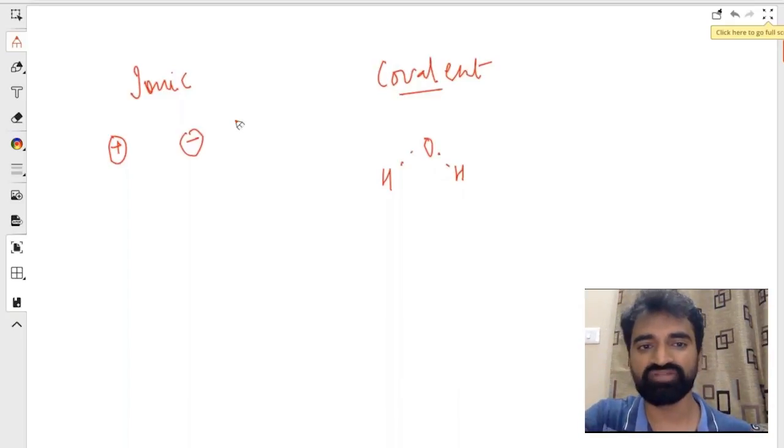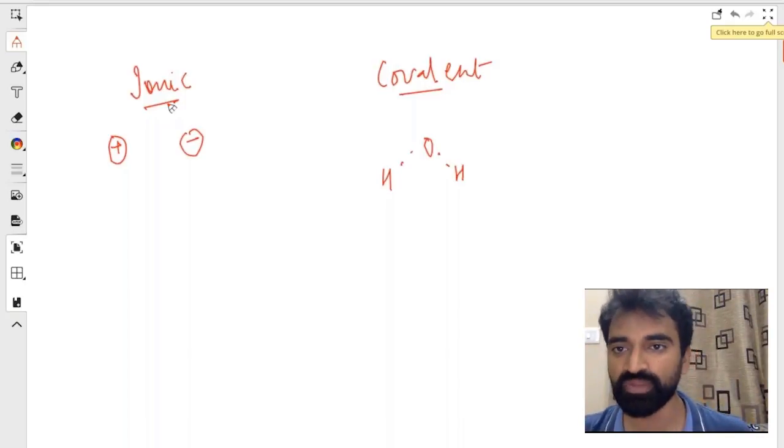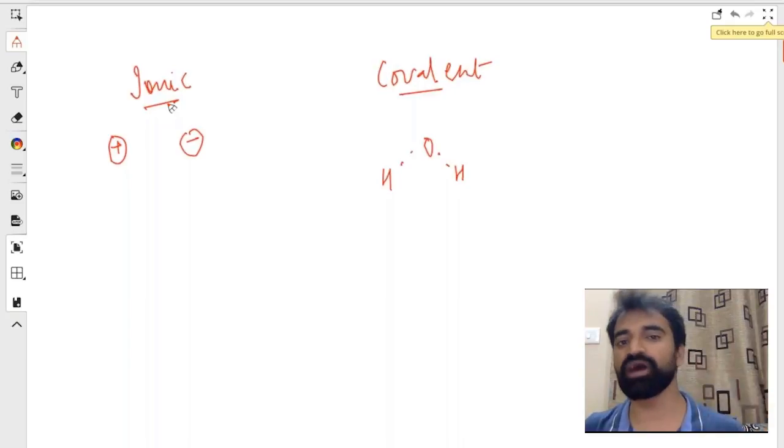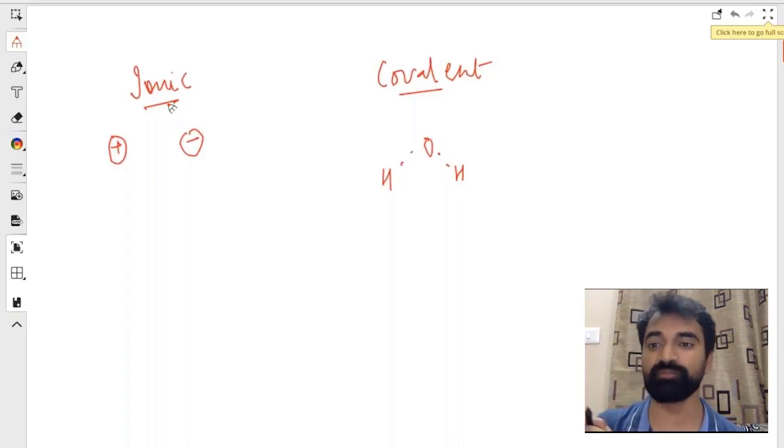Concept number one that I'm going to talk about is called polarization. Polarization states that no molecule that we have is strictly ionic or strictly covalent. Every ionic compound has some covalent nature, and every covalent compound will have some amount of polarity.